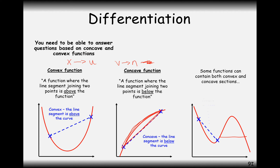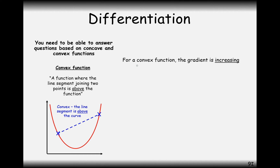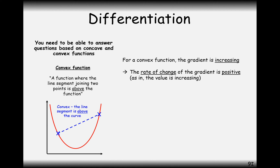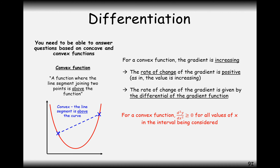How do we identify this mathematically? For a convex function, the gradient is increasing. At the start of the function we have a negative gradient, then zero, then positive — and the value of positivity gets bigger. So the rate of change of the gradient is positive, meaning d²y/dx² is greater than zero. For a convex function, the second derivative is positive.